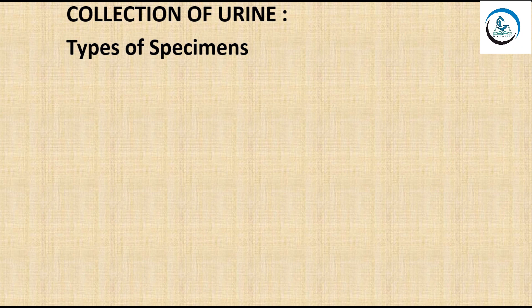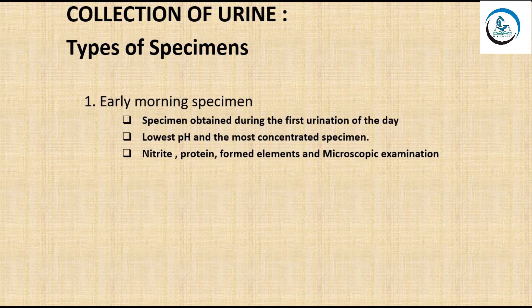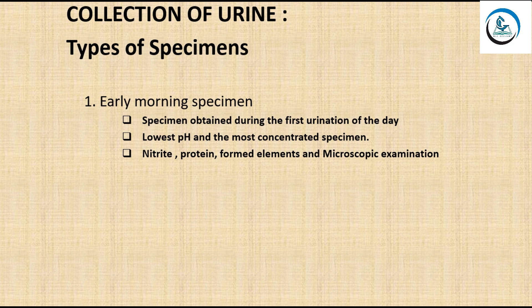Depending upon how urine is collected, the specimen can be divided into different types. The first is the early morning specimen, obtained during the first urination of the day — the urine voided when the patient first arises from sleep. This is the most concentrated specimen, with the lowest pH, and is used for examination of nitrite, protein, formed elements, and microscopic examination.